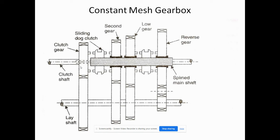As we can see clearly in the diagram of the constant mesh gearbox, this is the main shaft and this is the counter shaft. These two gears are in contact with each other, these two are in contact, and these two — everyone is in contact with each other. So how will the gears be engaged or disengaged?